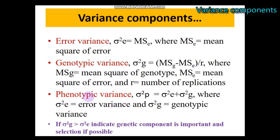The phenotypic variance is the sum of the error variance plus the genotypic variance, calculated in this way. If the genotypic variance is greater relative to the error variance, it is an important component and it's good for selection.